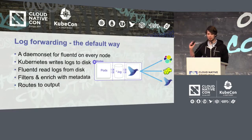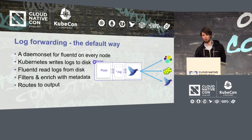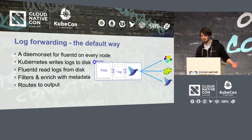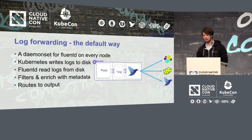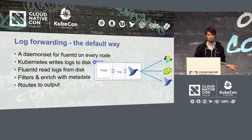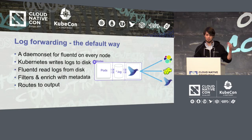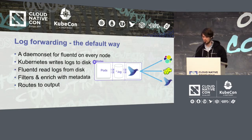The default way to do log forwarding in Kubernetes is to deploy Fluentd as a daemon set, so it runs once on every node. Since Kubernetes writes logs to disk, Fluentd can pick up these logs from the disk. You can use the filter plugin to enrich some metadata like namespace and pod, etc., and then route to one or a couple of endpoints.